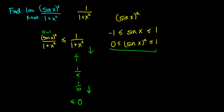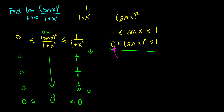We also know that sin squared x is always greater than or equal to 0, so sin squared x over 1 plus x squared is always greater than or equal to 0 over 1 plus x squared, which is just 0. So our function is sandwiched between 0 and 1 over 1 plus x squared. As x grows bigger, 0 stays at 0, and 1 over 1 plus x squared tends to 0. Therefore sin squared x over 1 plus x squared also tends towards 0.